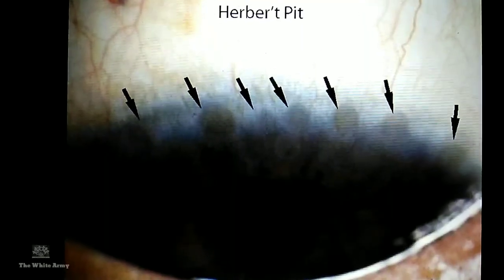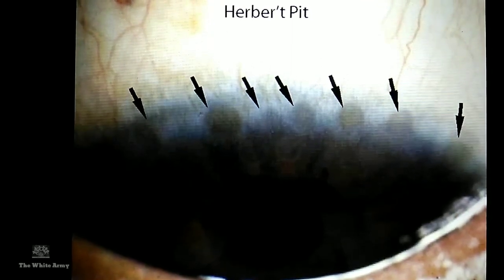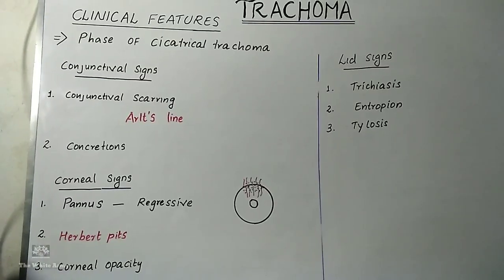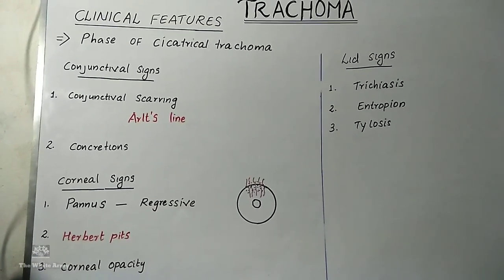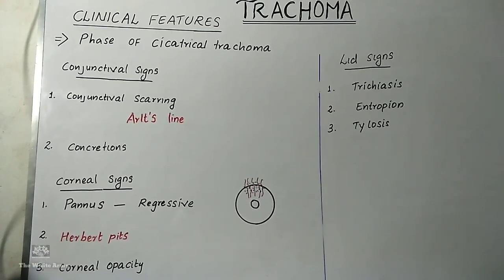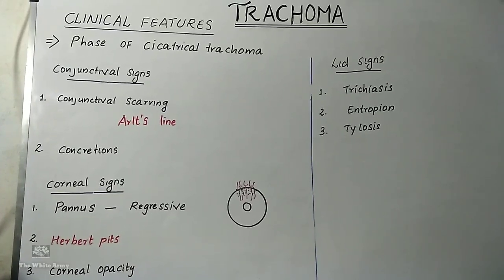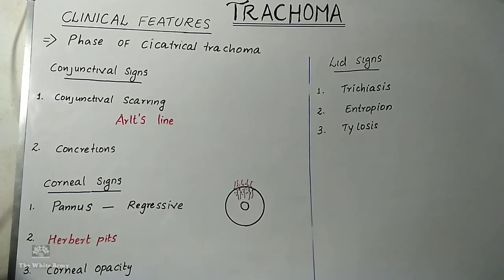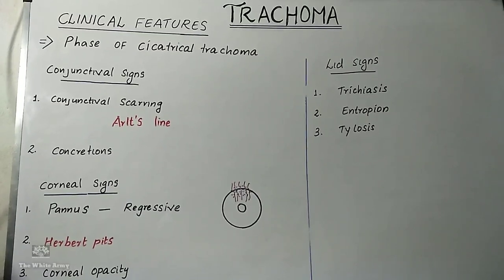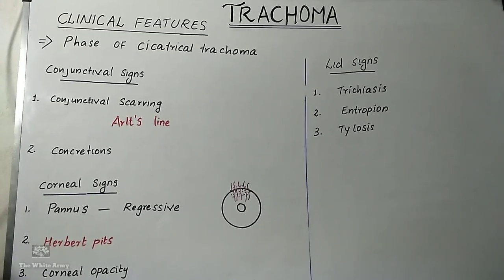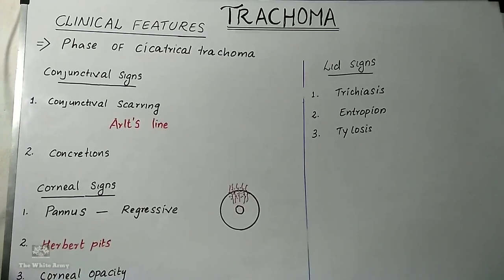The arrow in the image shows Herbert pits in the limbal area. Corneal opacity may be present in the upper part and may extend down to involve the pupillary area. The lid signs include trichiasis, entropion, tylosis, madarosis, and ankyloblepharon.